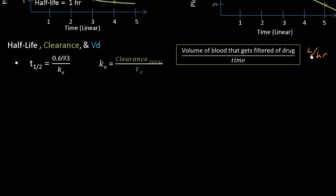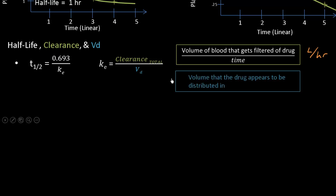Clearance is the volume of blood that gets filtered of drug per unit time, with units of liters per hour. It includes the kidneys, liver, and for inhaled drugs, the lungs. The volume of distribution in the denominator is the volume that the drug appears to be distributed in — there's a dedicated video on that.